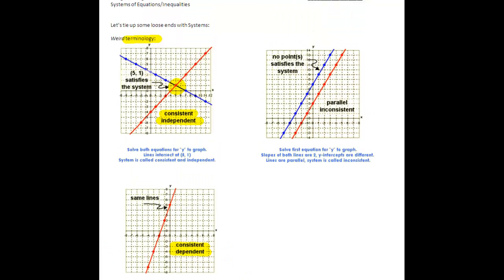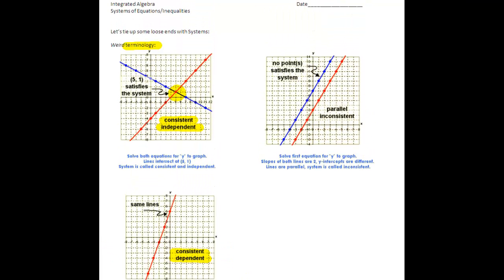When we do not have a solution, then it is called an inconsistent system. There is nothing that satisfies this. We have parallel lines, and it's an inconsistent system.